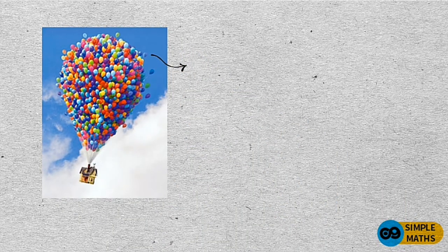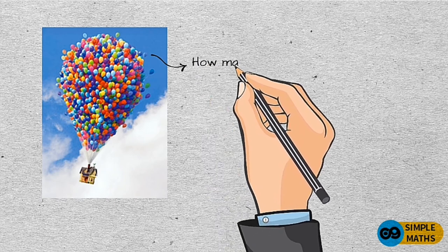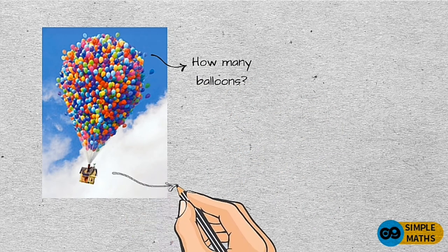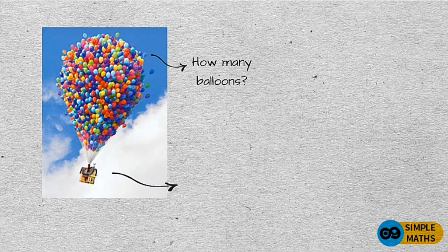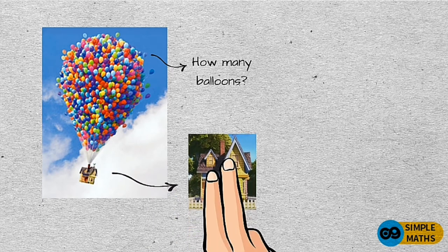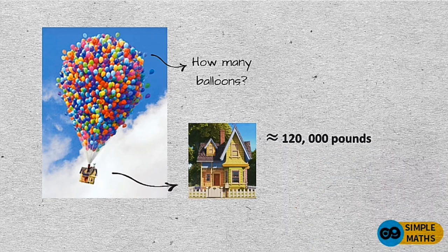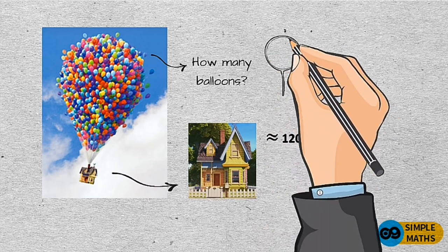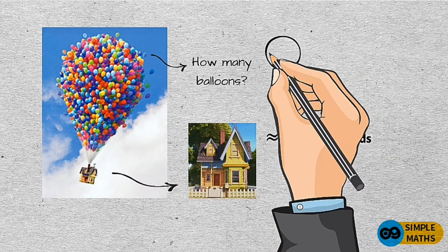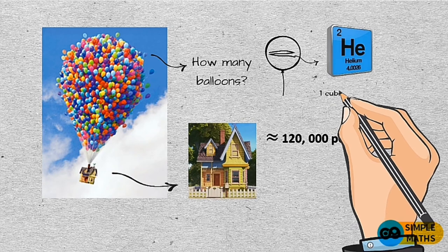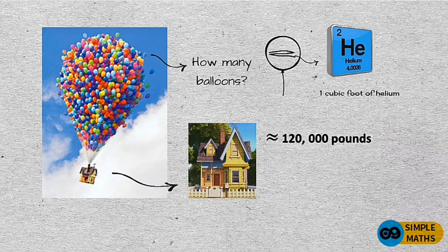To know the exact number of balloons used in this image, we have to do a little bit of physics. Let's consider the weight of the house. A typical house weighs 80,000 to 160,000 pounds. Let's just say that Carl's house is average size, weighs 120,000 pounds. Now let's consider the thing that makes the house float. It's not the balloon, but it's the element inside the balloon, which is called helium. Helium is the second element in the periodic table, in which the lifting power of one cubic foot of helium is 0.066 pounds. To know how much helium is required to carry Carl's house, we need to divide 120,000 by 0.066, which is equal to 1.82 million.